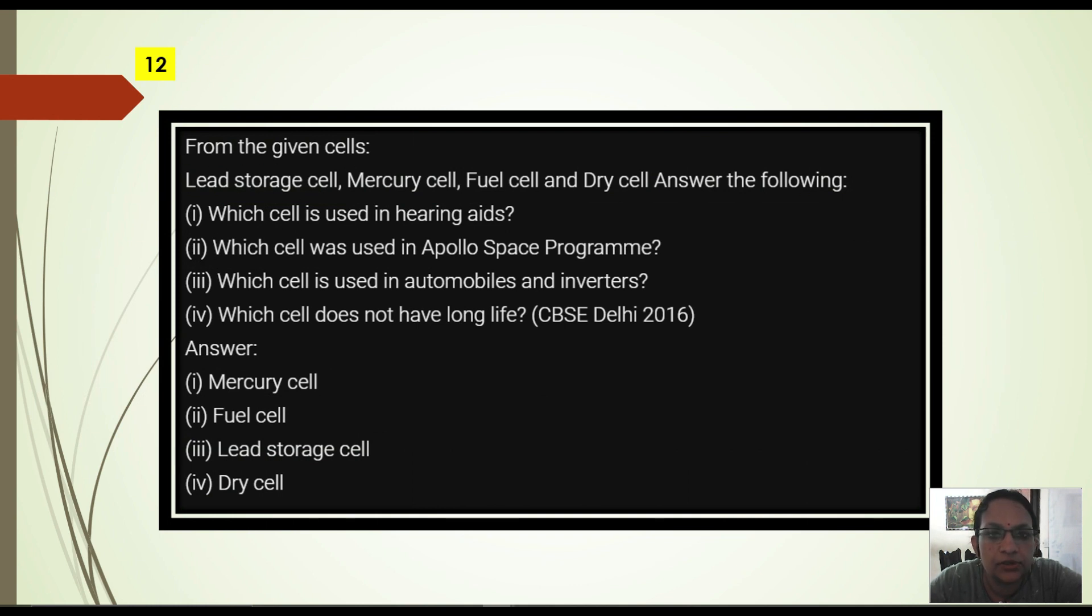Next question. From the given cells: Lead storage cell, mercury cell, fuel cell and dry cell, you have to answer this. You should remember this. In hearing aid we use mercury cell. In Apollo space program the cell used is fuel cell. In automobile inverter we use lead storage. And which cell does not have long life? That is our dry cell.